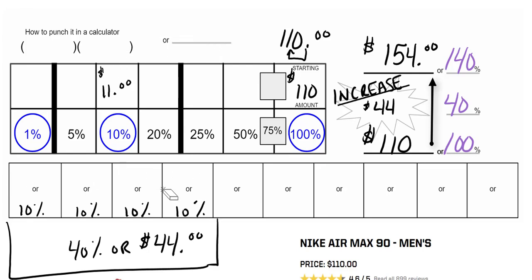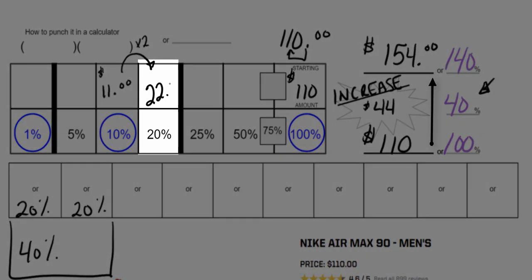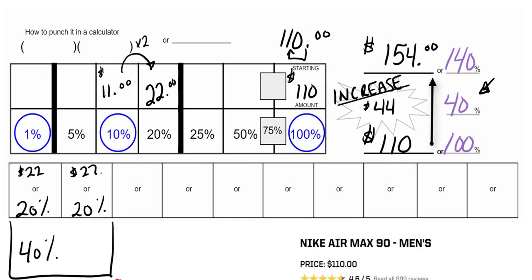One of the different ways that I've seen, and that students will come up to me and say, they said, Mr. Parks, we can build 40% out of two 20% boxes. And I say, you're exactly right. We can do that. But I also say, do you know what 20% of the original price is? And they say, well, I took $11 and multiplied it by two and got $22. Each 20% box is $22, and it's going to give us the same result. 40% represents $44, and that's where our increase price comes in right there.